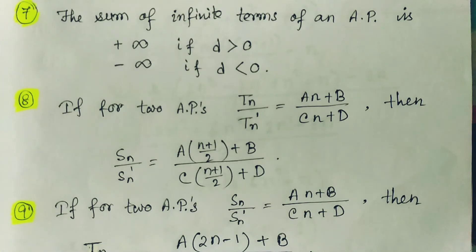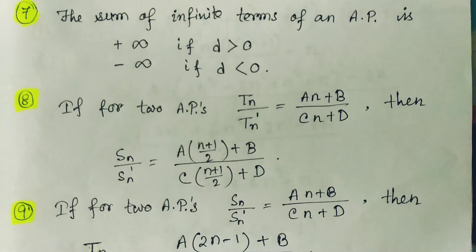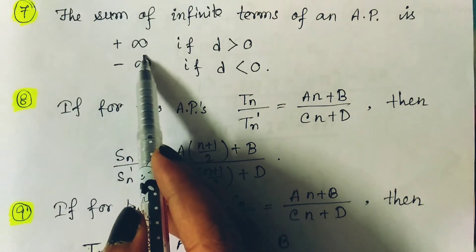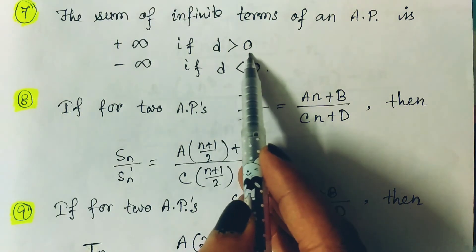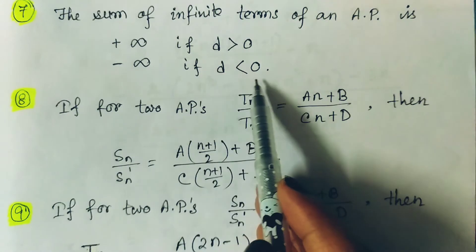The sum of infinite terms of an AP: if the AP series goes to infinity, for example 1 plus 2 plus 3 plus 4 continuing forever, then the sum is plus infinity if the common difference d is greater than 0, and minus infinity if the common difference is less than 0.